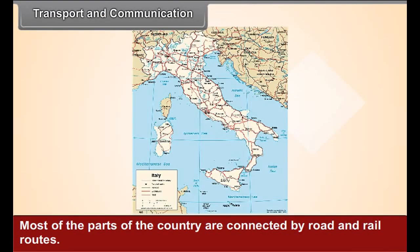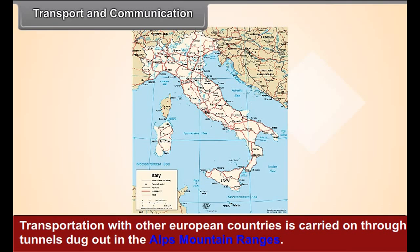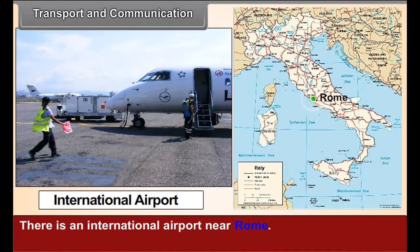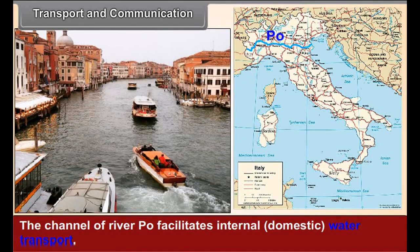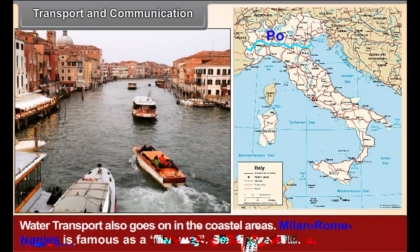Transport and communication: most parts of the country are connected by road and rail routes. Transportation with other European countries is carried on through tunnels dug in the Alps mountain ranges. There is an international airport near Rome. The channel of river Po facilitates internal domestic water transport, and water transport also goes on in the coastal areas.